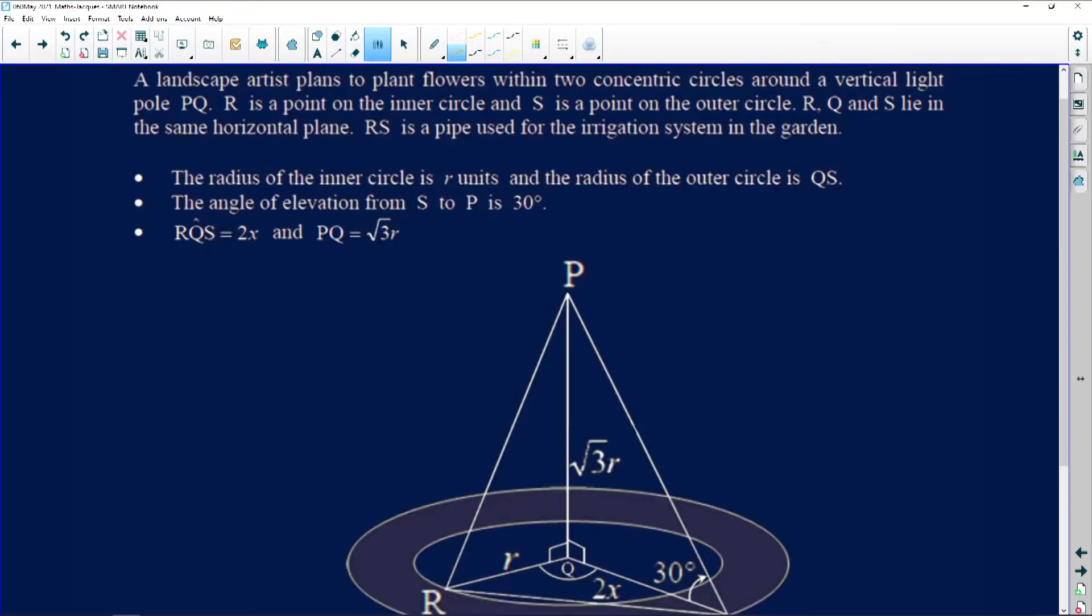Let's have a look at our first question today. It deals with trigonometry. It says a landscape artist plans to plant flowers within two concentric circles. Now remember, two concentric circles mean that these two circles share the same center around a vertical light pole. The light pole is here at PQ. They tell us it's vertical, so they're accentuating the fact that those two are right angles.